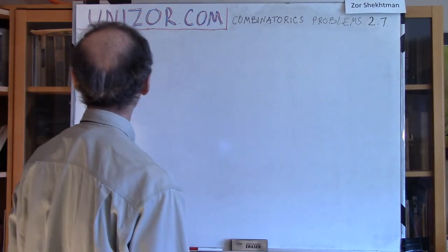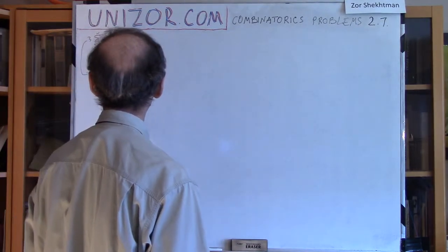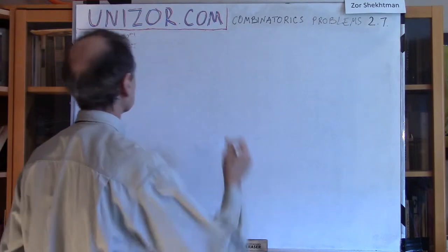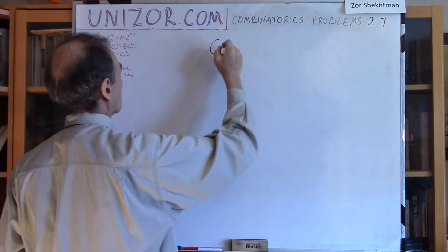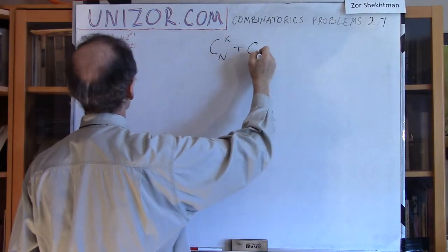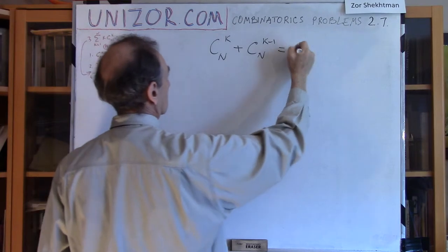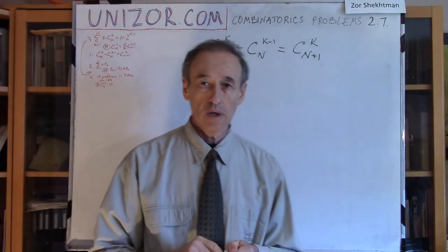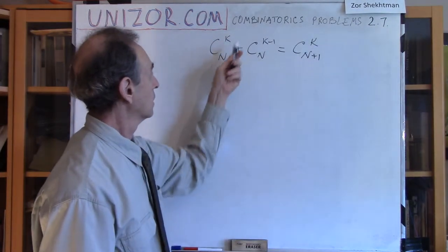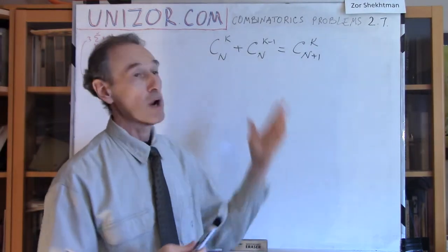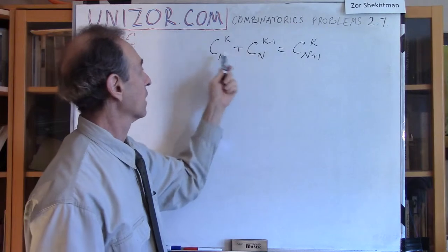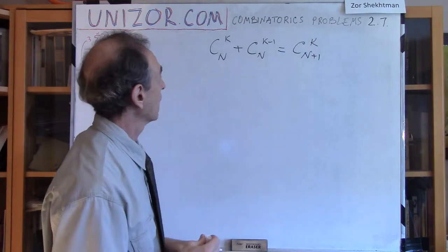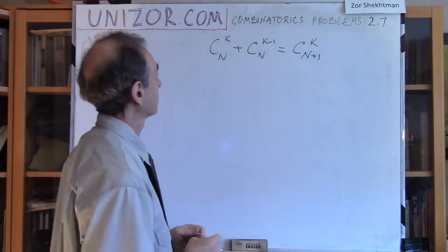Let's solve problems on combinatorics. I have four relatively easy problems. Let's start. Number one: we have a certain identity which I would like to prove. This is a very simple identity. It's true for any k and n where these expressions make sense, which basically means k and n are supposed to be natural numbers and k should not exceed n. Actually, k can be zero as well.